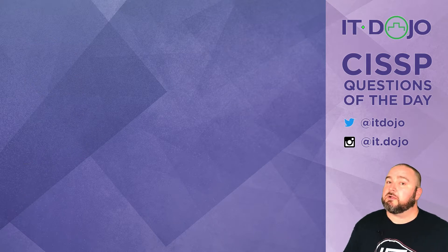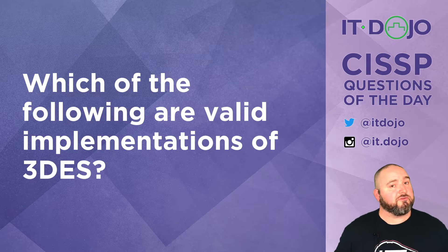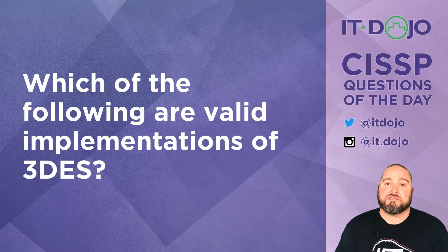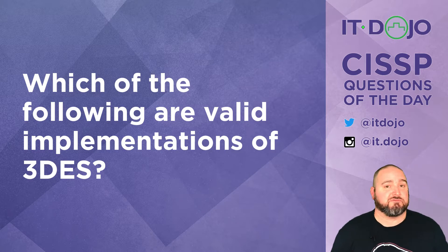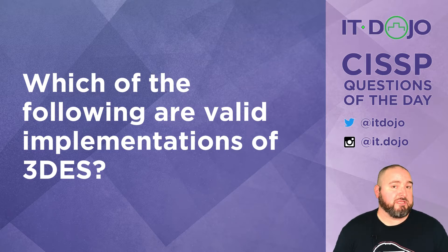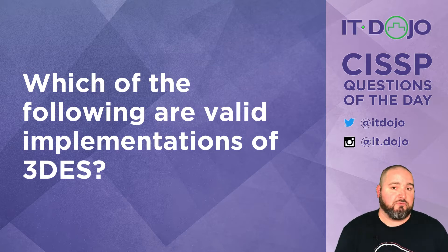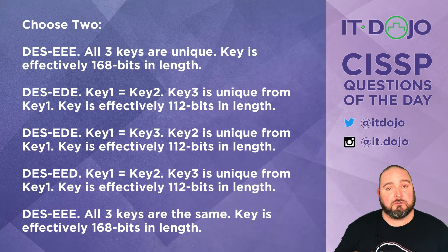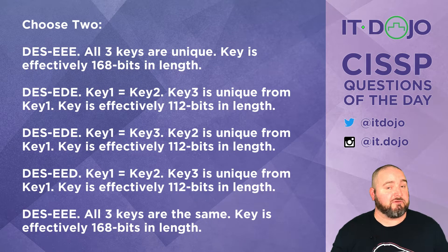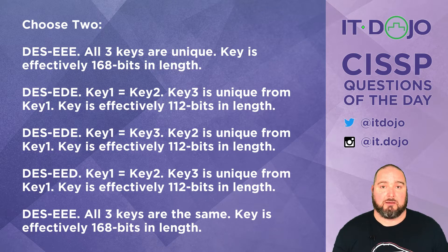Okay, here comes question number two. We're sticking in the world of encryption today. Which of the following are valid implementations of Triple DES, or 3DES? Go ahead and pick two. Click pause, give it a read, and when you think you've got it, click play again and we'll sort it all out.